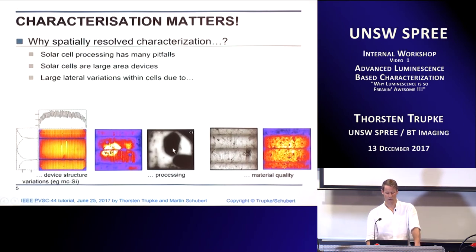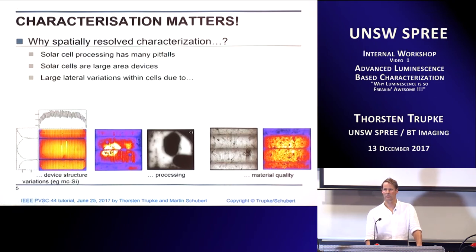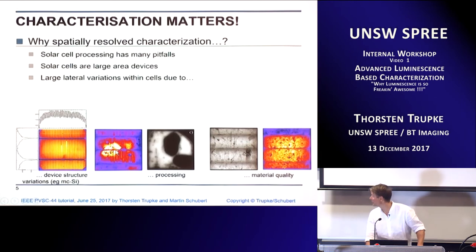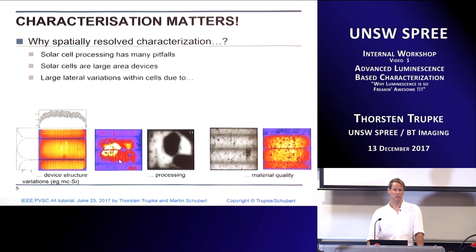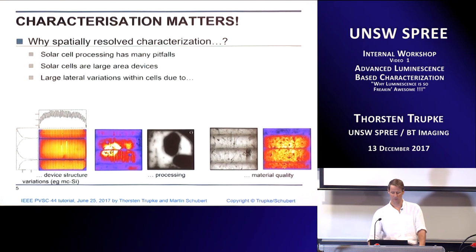Then there are processing variations. In one example, people at UNSW intentionally put fingerprints on the wafer prior to diffusion — you see black dots and lines representing recombination-active sites caused by processing-related scratches, crystallographic defects, and so forth. In another example, a solar cell with severe series resistance in one area appears bright, and white strips indicate broken fingers. These are processing-related variations: problems with screen printing, diffusion, or firing, all of which lead to spatially resolved problems that we need to learn about.